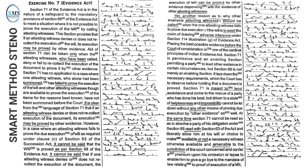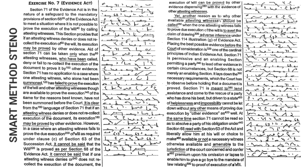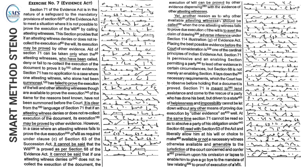Aid of Section 71 can be taken only when the attesting witnesses who have been called deny or fail to recollect the execution of the document, to prove it by other evidence. Section 71 has no application to a case where one attesting witness, who alone had been summoned, has failed to prove the execution of the will, and other attesting witnesses though available have not been summoned before the court.